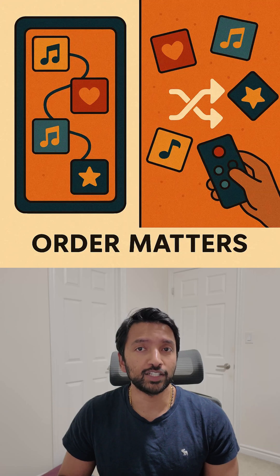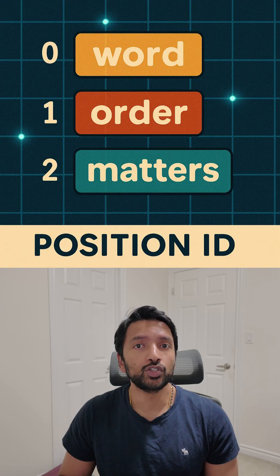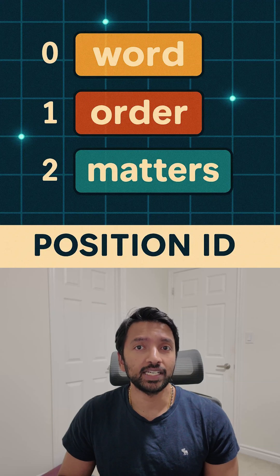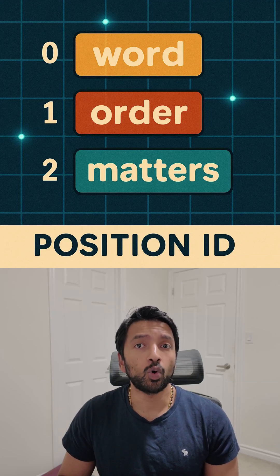Order matters, but transformers process all words at once. So they need help tracking order. Positional encoding adds signals to each word — like invisible coordinates — so the AI knows what comes first, second, and third.